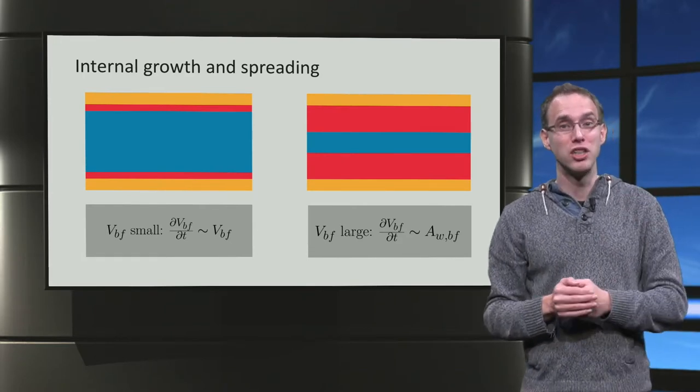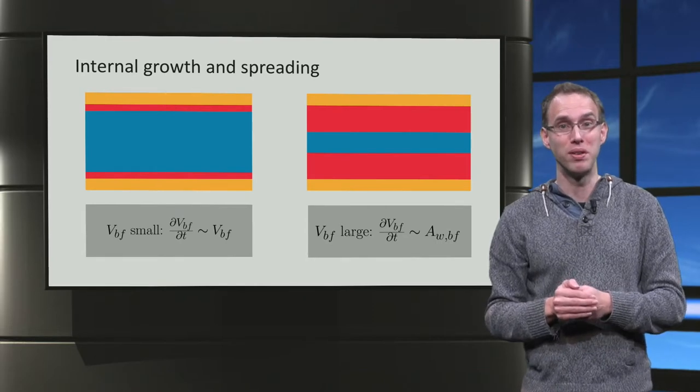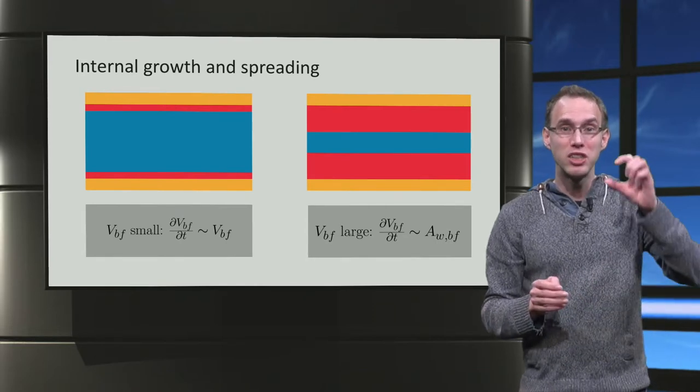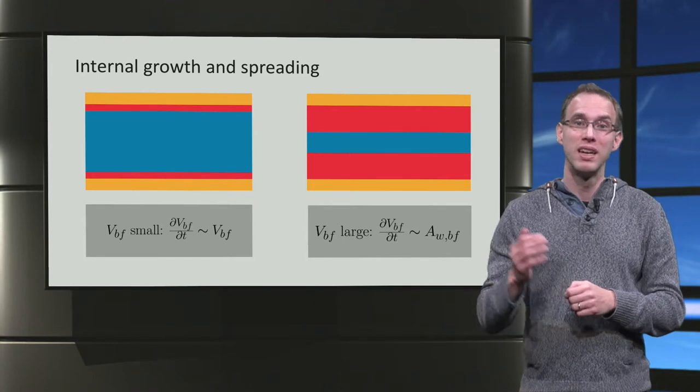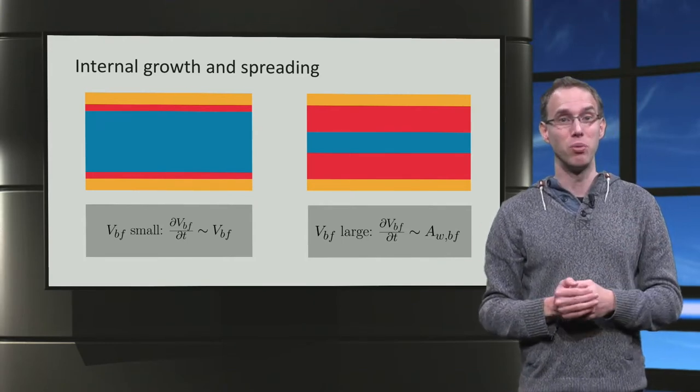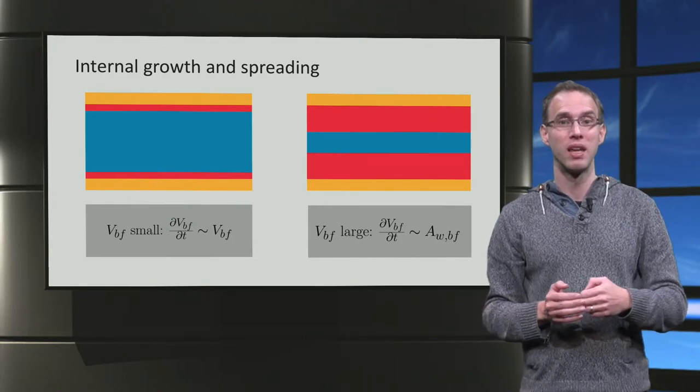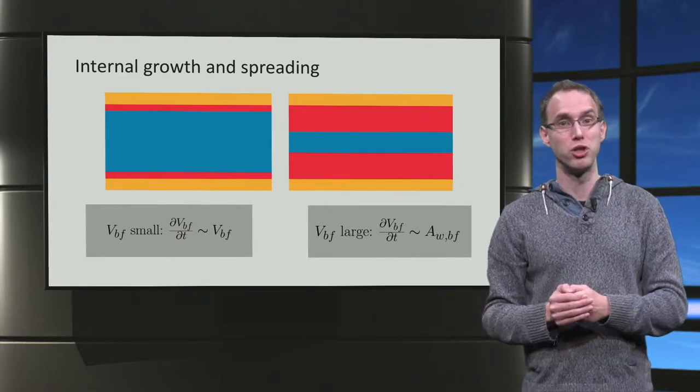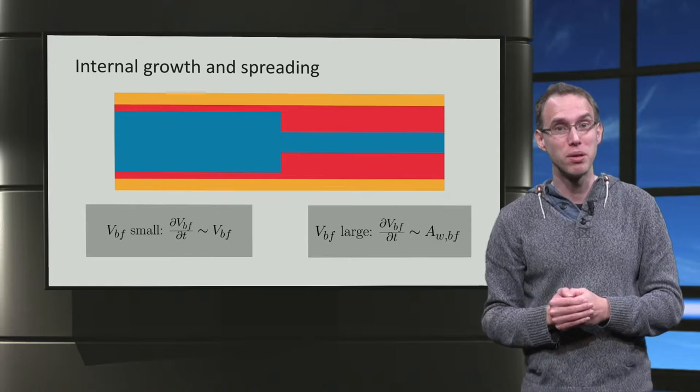If VBF is large, the tube is starting to fill up with biofilm. Nutrients can only reach the outer part of the biofilm. In this case, the growth is proportional to the contact area between the water and the biofilm.